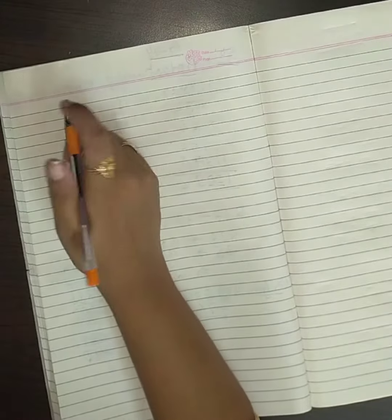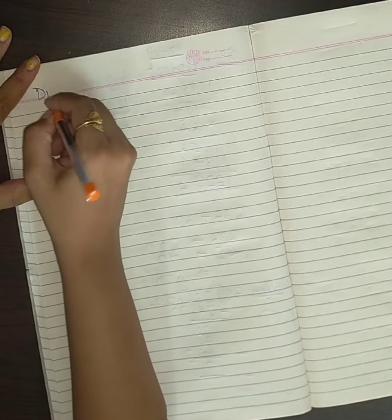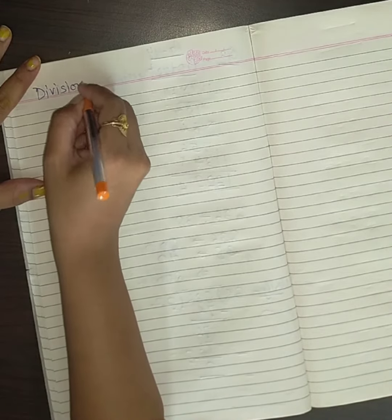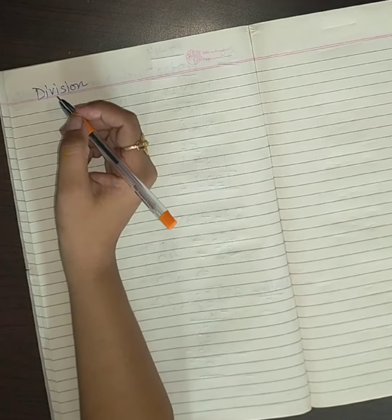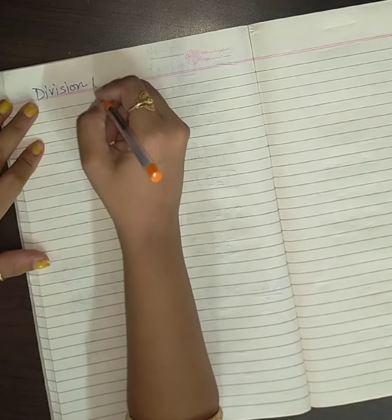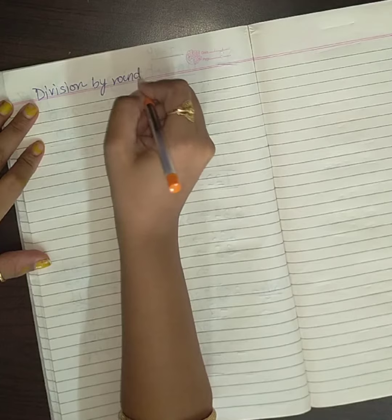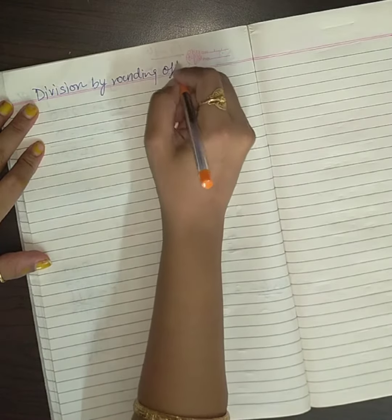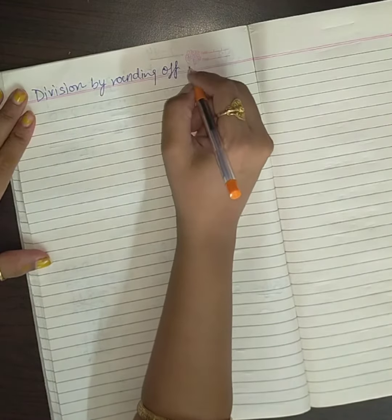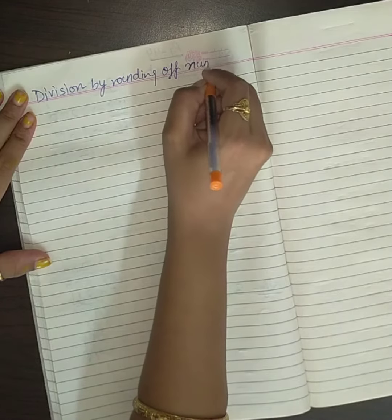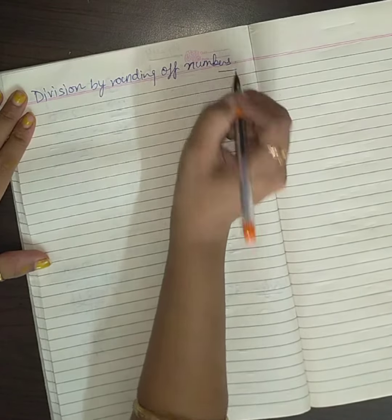Okay class, now we will do division by rounding off numbers. We'll estimate the division by rounding off the numbers.